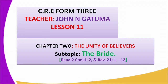We have lesson 11 and we have been looking at the unity of believers as chapter 2, and we are looking at the symbols that explain the unity of believers. There are various images and symbols that are used, and today we want to discuss the symbol of the bride. Our reading that will guide our lesson today shall be 2 Corinthians 11 verse 2, and also in the book of Revelation, the last book of the Bible, chapter 21 verse 1 through 12. That will be our guiding scriptures for this particular lesson.